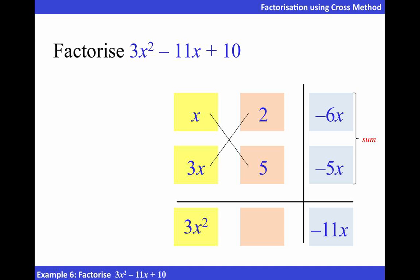Now, let's work backwards. To obtain negative 6x, it means it's 3x multiplied by negative 2. Similarly, to get negative 5x, we have x times negative 5.